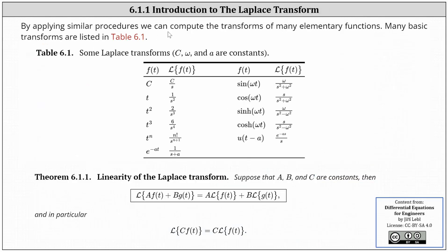By applying similar procedures, we can compute the Laplace transforms of many elementary functions. Many basic Laplace transforms are listed in table 6.1, where c, omega, and a are all constants. The only function that might stand out is u of t minus a, which is the unit step function or Heaviside function, which we'll discuss more in the next lesson.